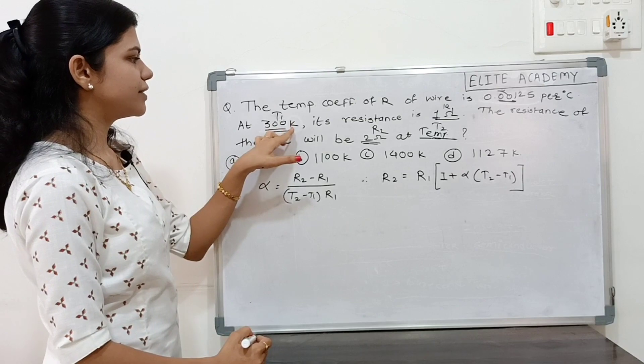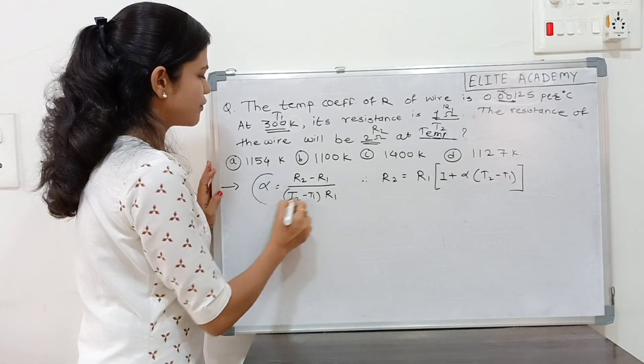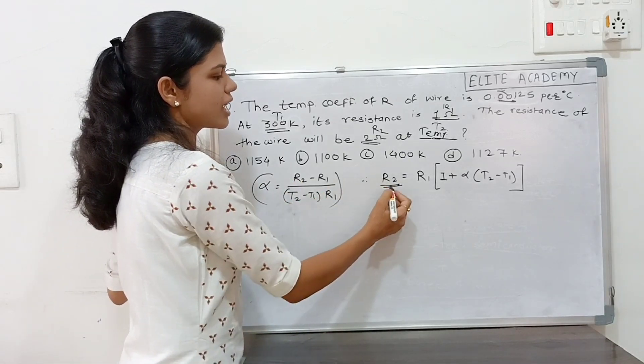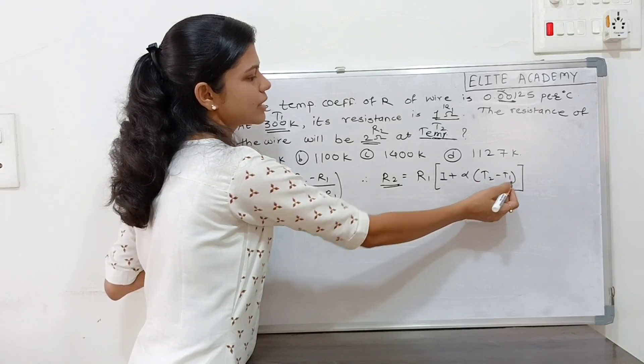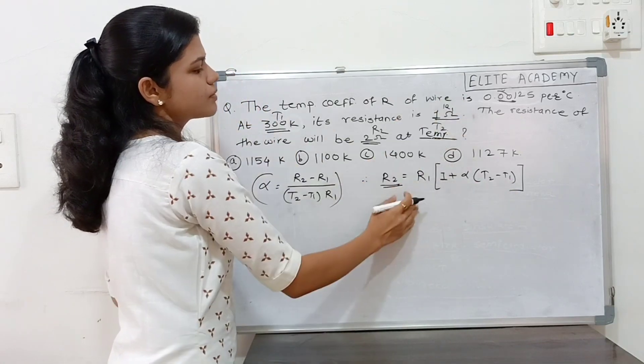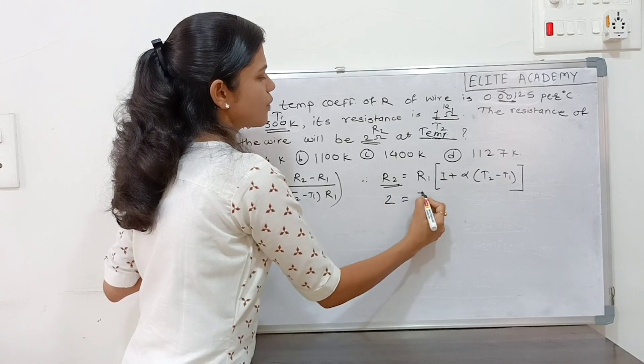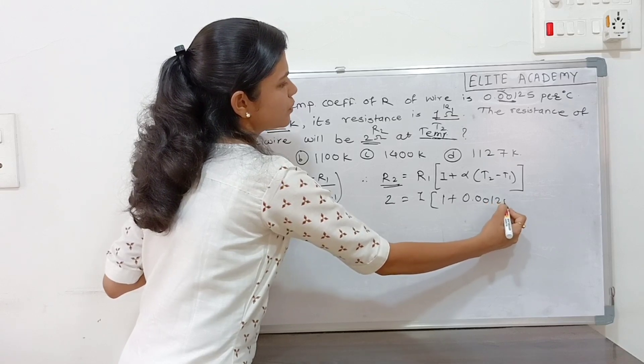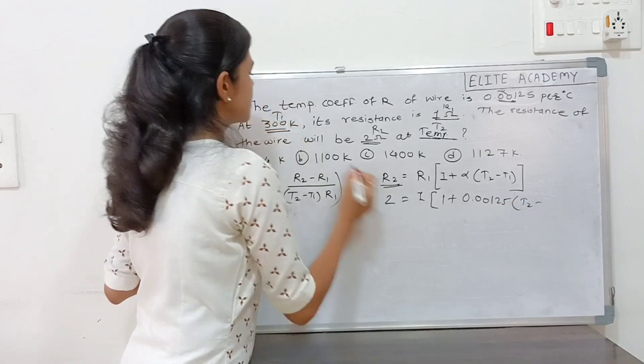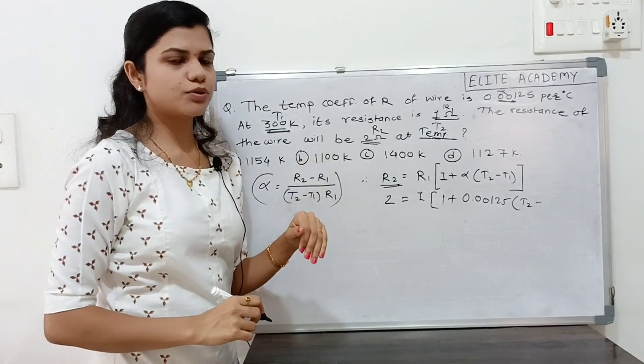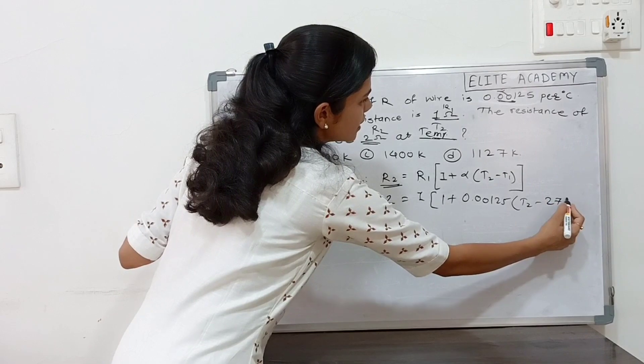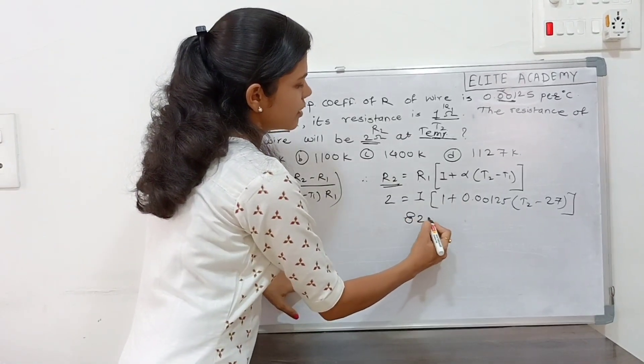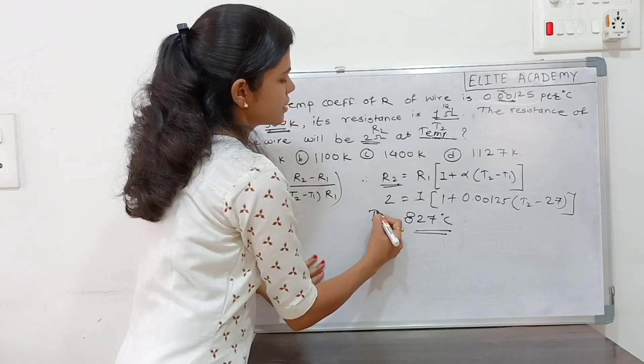So this is in Kelvin. We have a formula for alpha. Alpha is equal to slope upon R1. From this we can rearrange. By rearranging R2 is equal to R1 1 plus alpha T2 minus T1. Just put all this value over here. 2 is equal to 1, 1 plus alpha value 0.00125 into T2 minus T1 is 300 Kelvin. Convert it into the degree Celsius. It will be 27 degree Celsius.